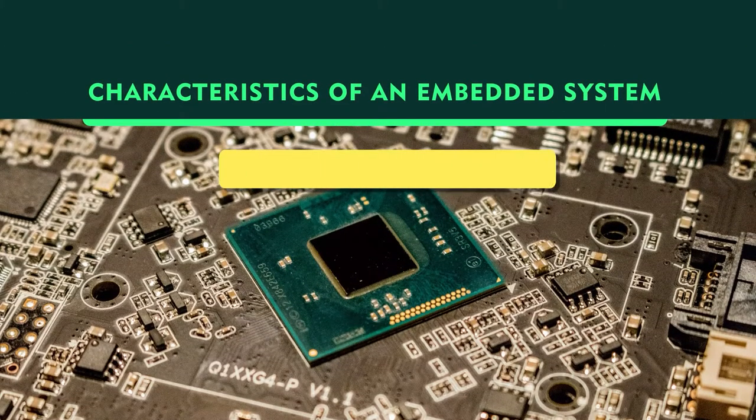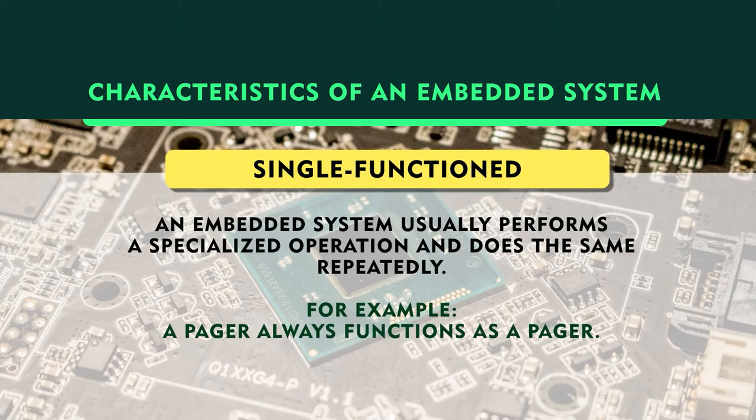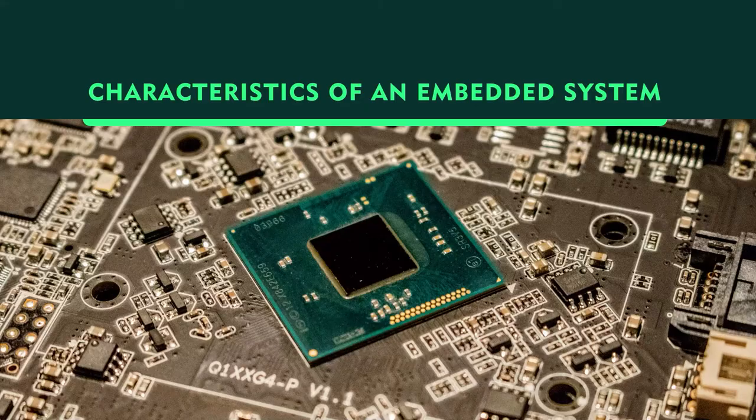Coming to the characteristics: one is that it is mainly single function. In most of the systems we have seen, the embedded system is built in with a single function. If there are three functions to be catered to, three different kinds of embedded systems may be inserted depending upon the functionality. An embedded system usually performs a specialized operation and does the same repeatedly. For example, a pager always functions as a pager — the inbuilt embedded program displays certain characteristics after communication is done to that particular pager.